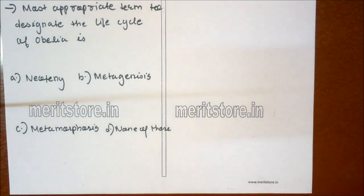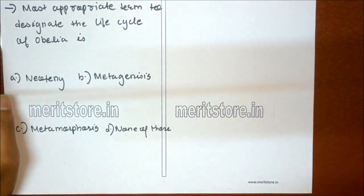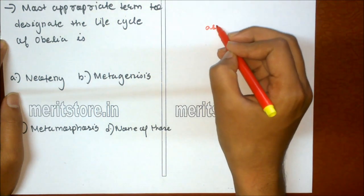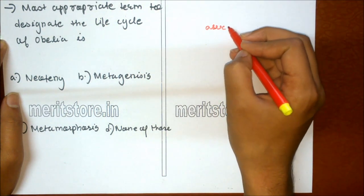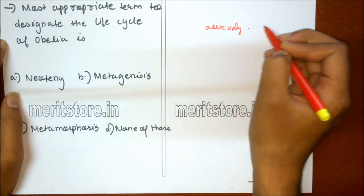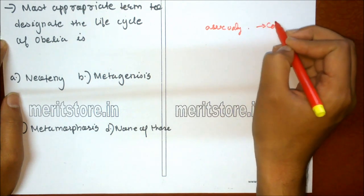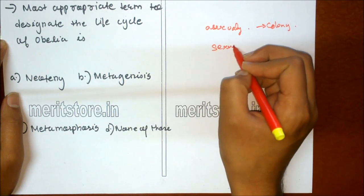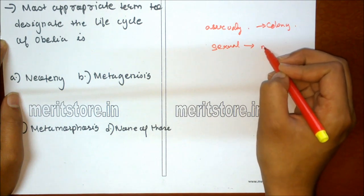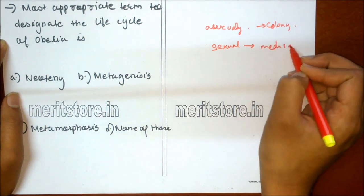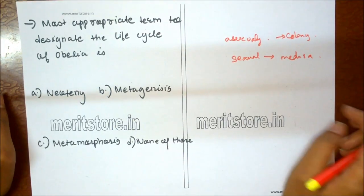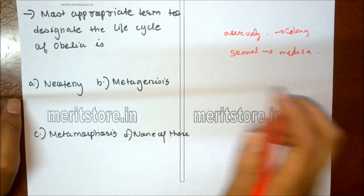The most appropriate term to describe the life cycle of Obelia is: A neoteny, B metagenesis, C metamorphosis, D none of these. Obelia shows alternation of asexual and sexual phases — the asexual phase is represented by the colony, while the sexual phase is the medusa. The two alternate in the life cycle; such alternation between sexual and asexual phases is known as metagenesis. Option B is the correct answer.